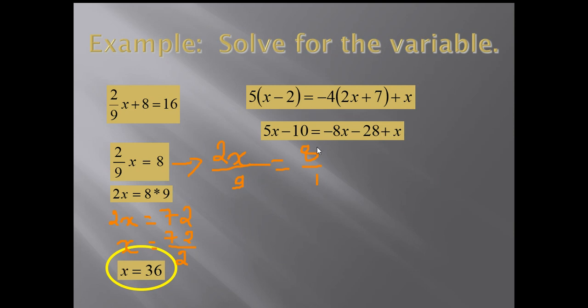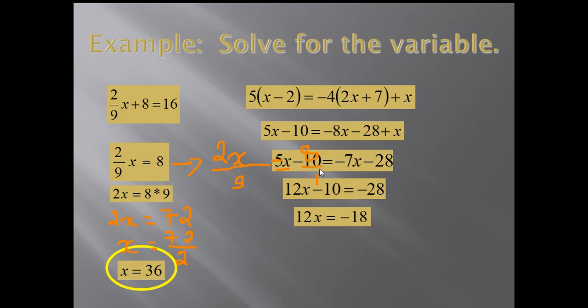Then, we're going to do x on one side, the constant on the other side. I will have 5x minus 10. You can simplify the minus 8x plus x is minus 7x. So, I will have 12x minus 10 equal to minus 28. Then I move the 10, so minus 28 plus 10 becomes minus 18. x will be equal to minus 18 over 12, which simplifies to minus 3 over 2.